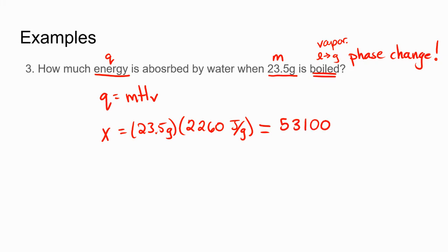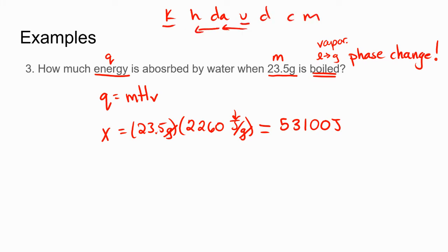The answer is 53,100 joules — we need those two zeros to keep the magnitude. Grams cancels, leaving joules. We can shorten that by using kilojoules: using King Henry, going from joules to kilojoules is three letters to the left, so we move the decimal three places to the left, giving us 53.1 kilojoules.